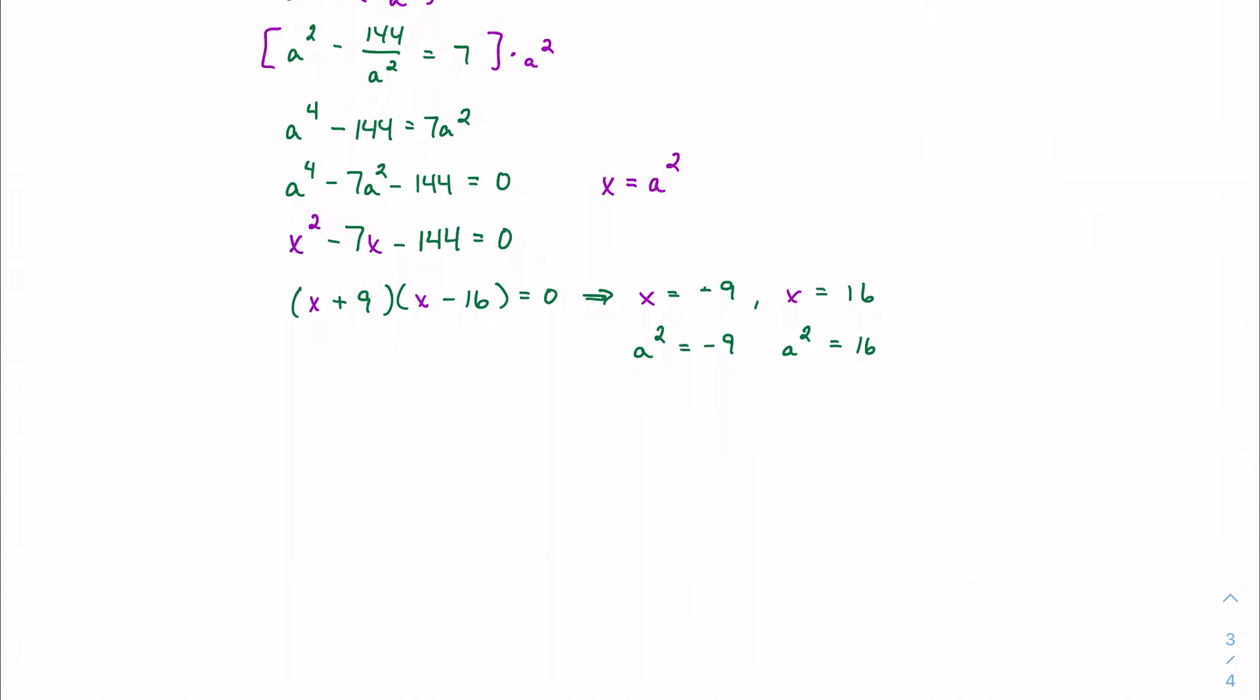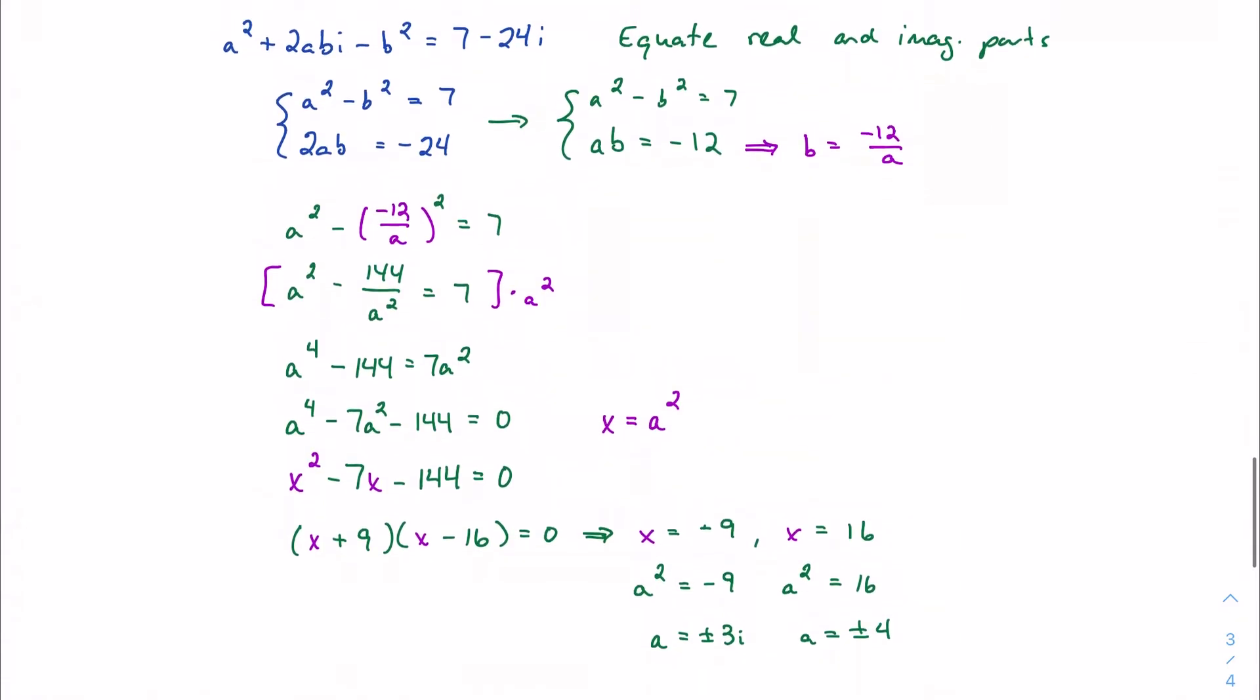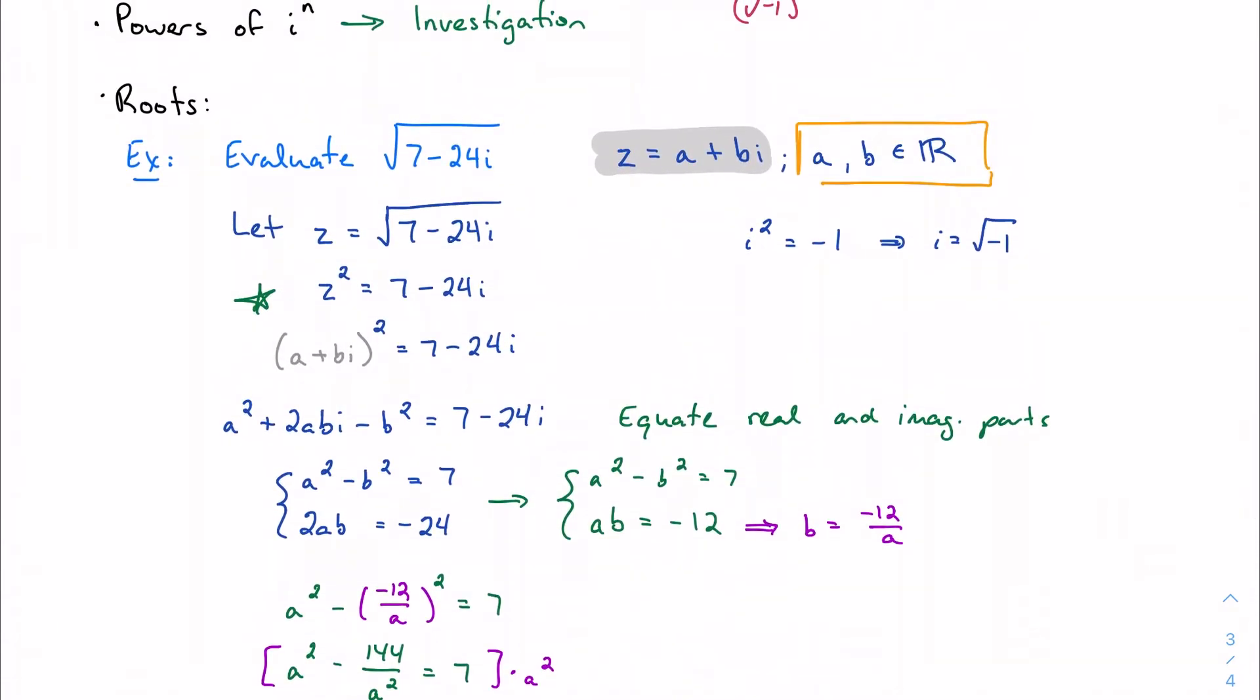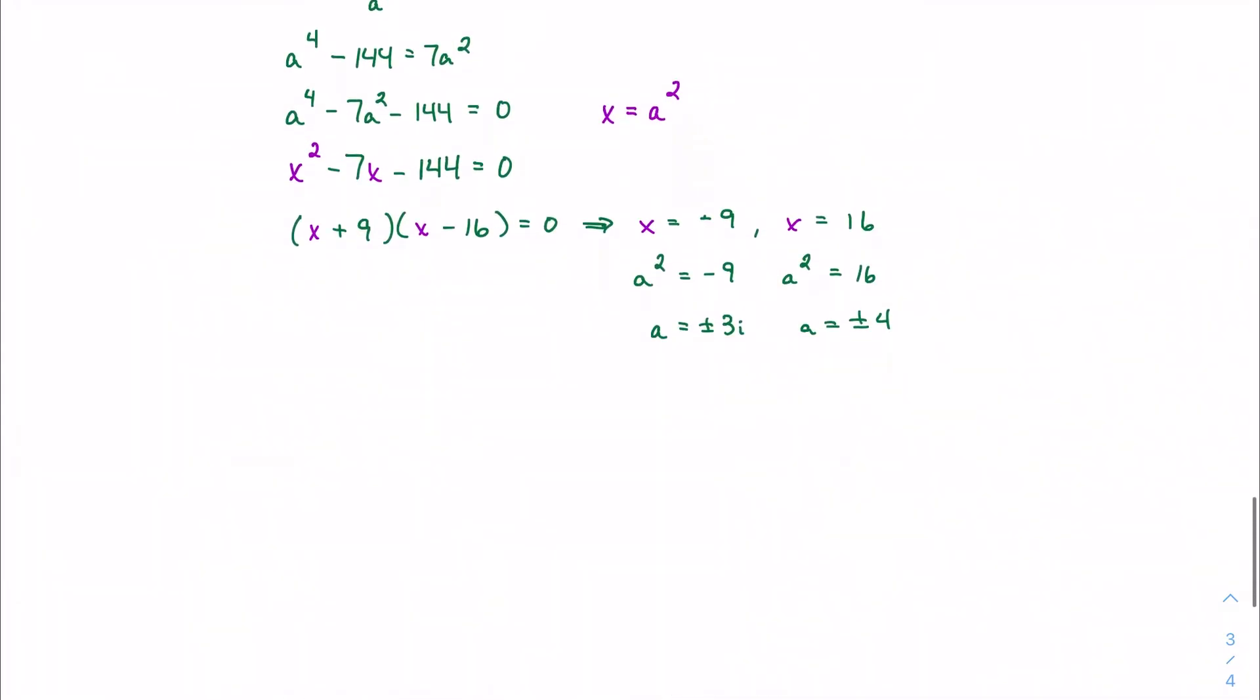This would give me plus or minus 3i and plus or minus 4. Well, we said at the beginning that a and b need to be real numbers, so I can reject and I need to reject 3i as a valid solution. Great, so I've got two values for a here. How do I find b?